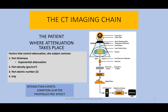Another example: in the abdomen, ascites — extra amounts of fluid — makes it difficult to penetrate. We have to go up in technique, but not so much as to cause an extremely long scale of contrast. Because as you go up in kVp to penetrate, things get grayer and grayer — longer scale of contrast. That's part density changing.